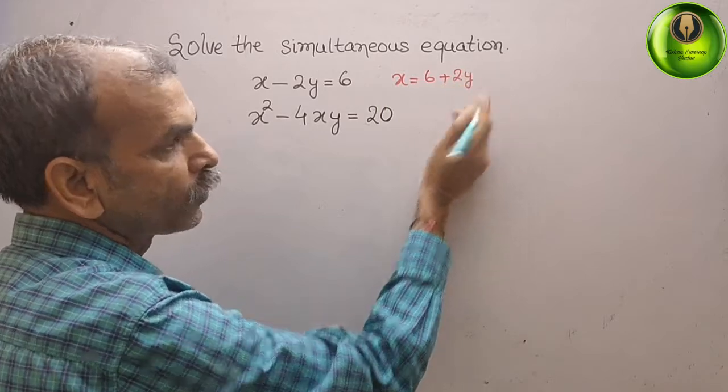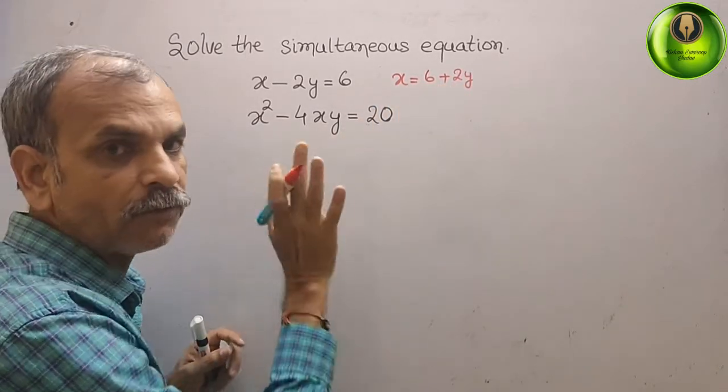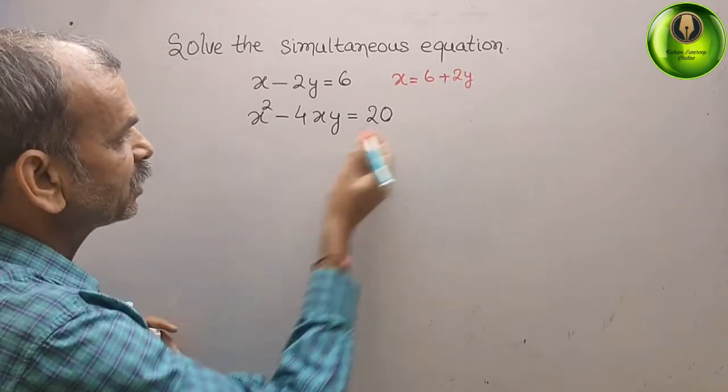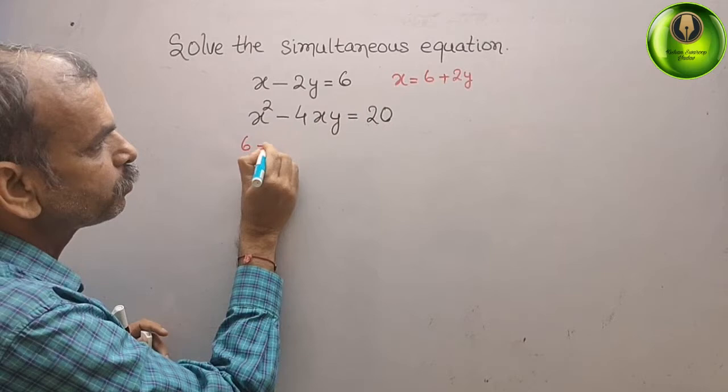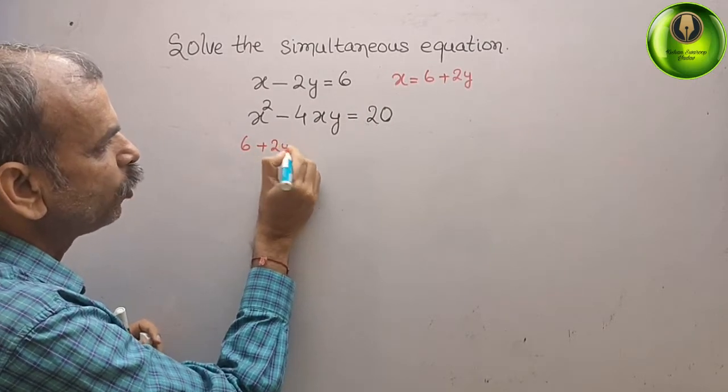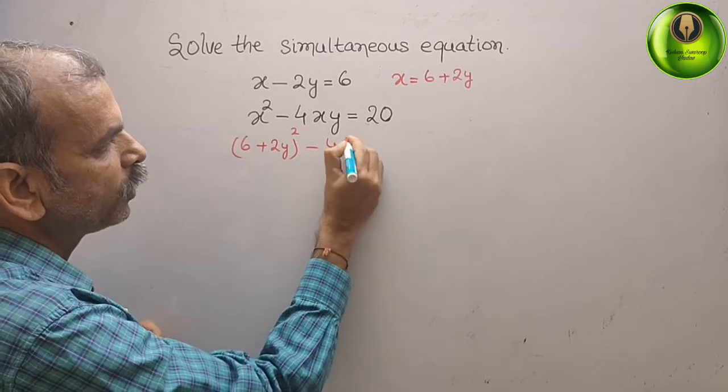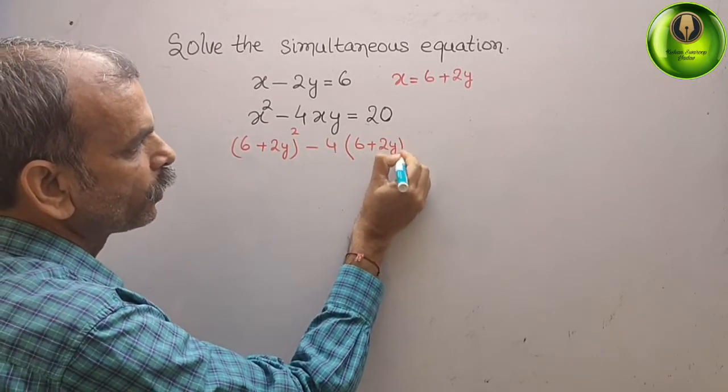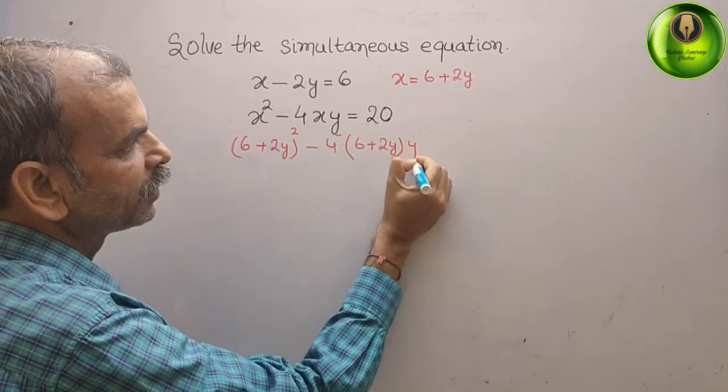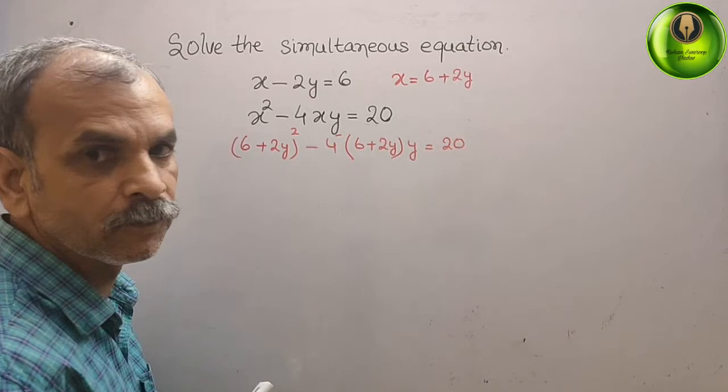Now substitute this value in the second equation. What we will get? We will get here it is x squared, that means 6 plus 2y whole square minus 4 into 6 plus 2y and y, that is equal to 20.